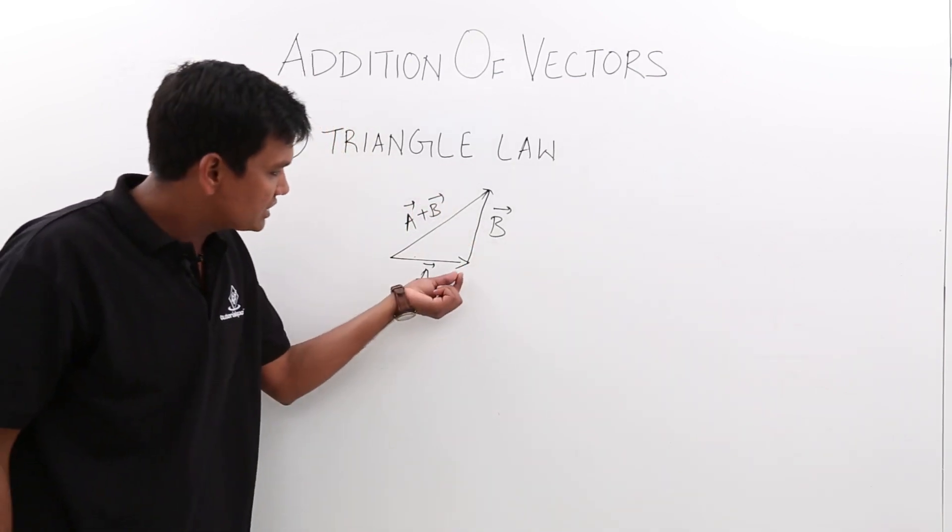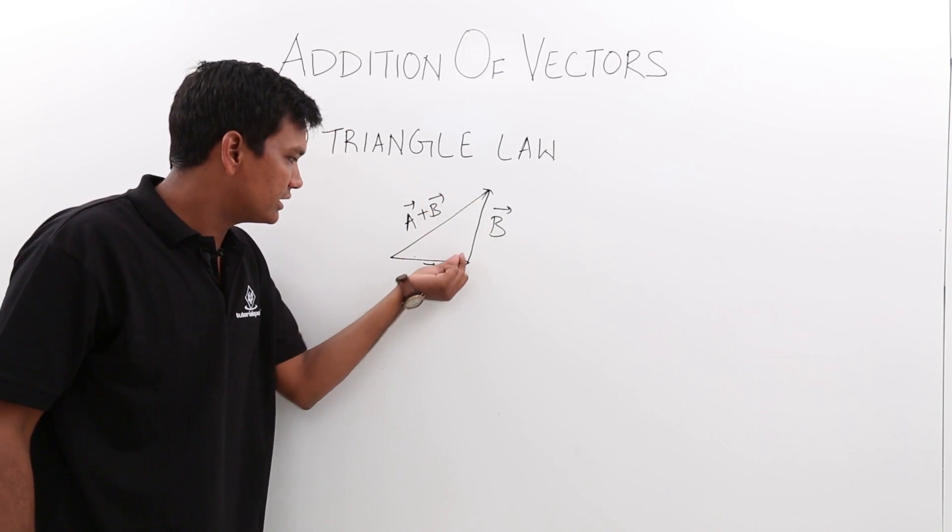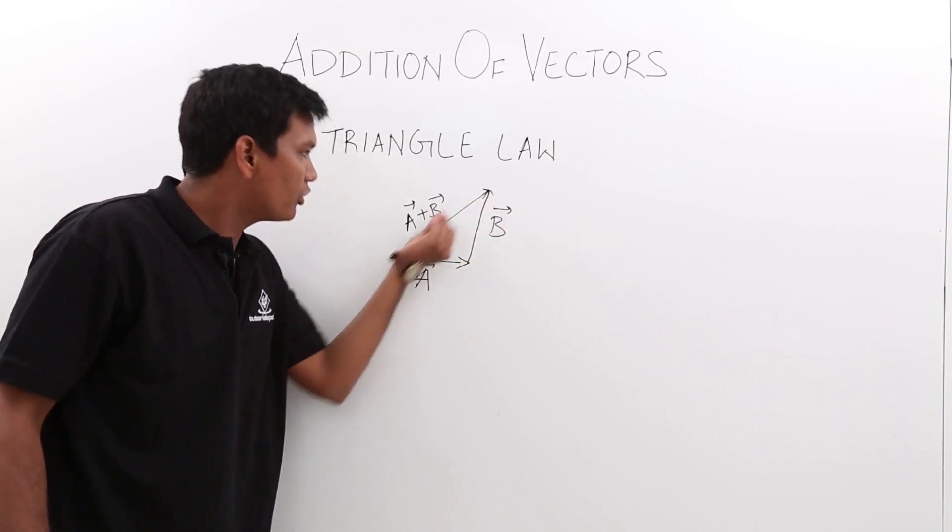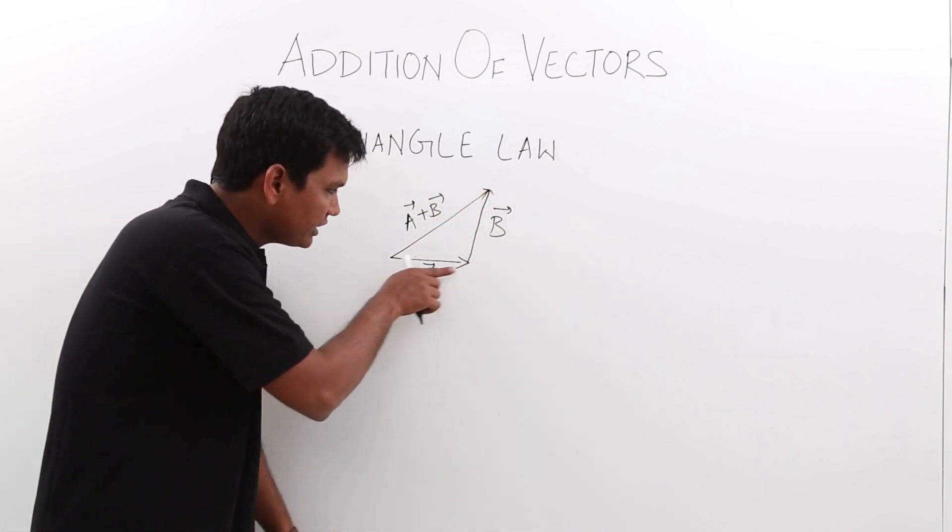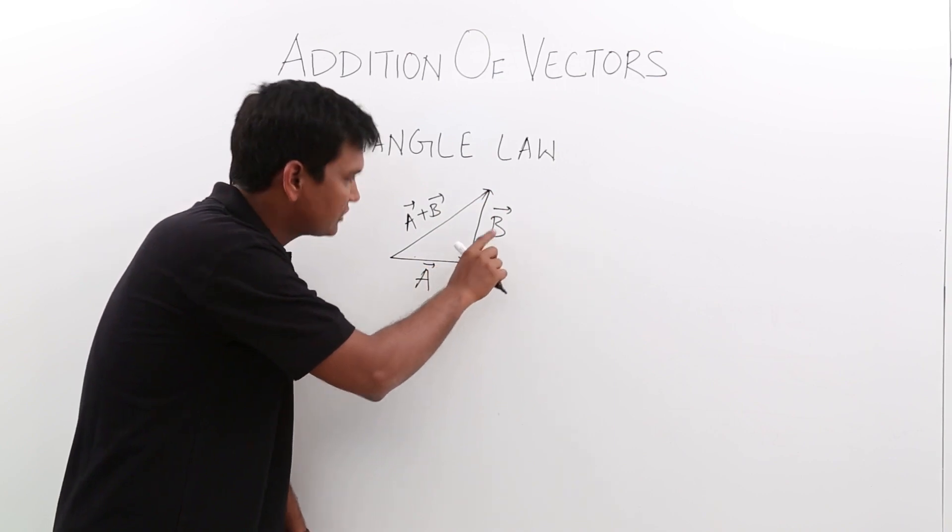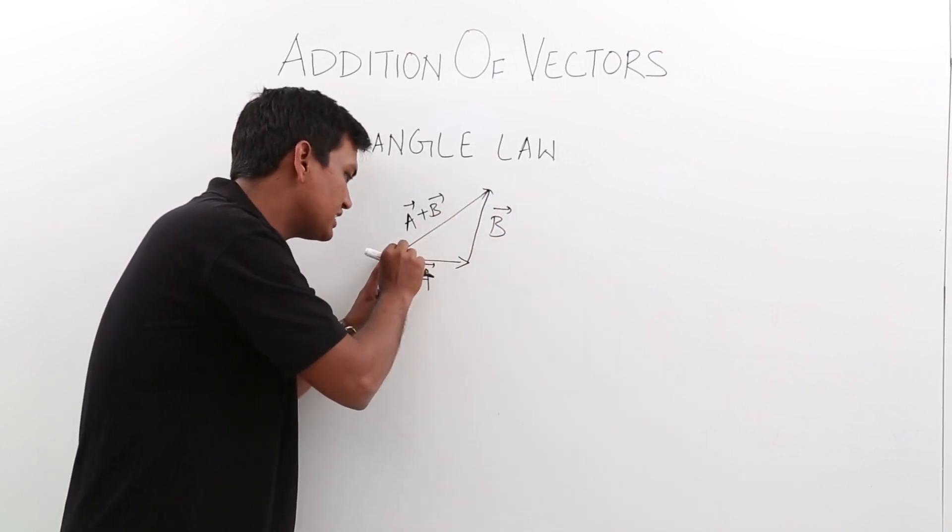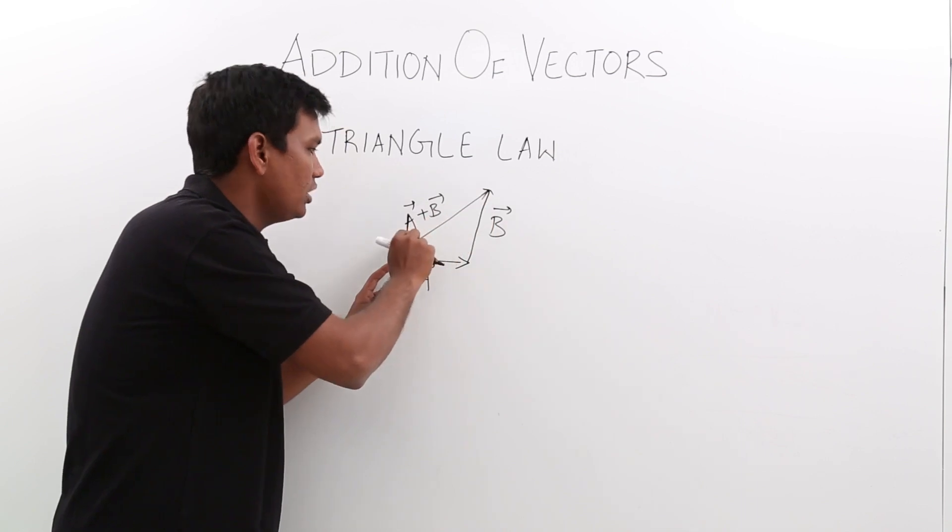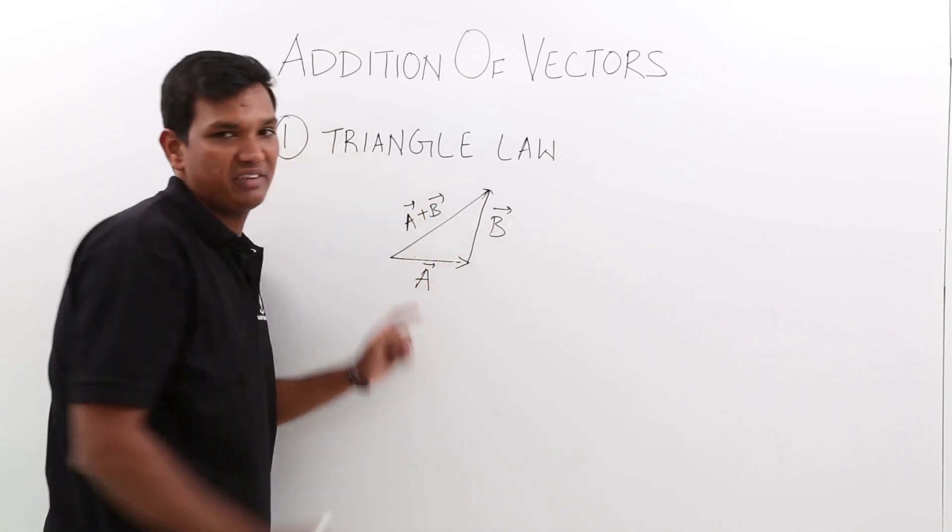Remember, always we have to close this vector from the opposite side. This vector is going in this way, this vector is going upward. So the resultant will always close this. The resultant would be A plus B vector.